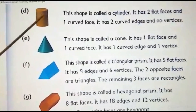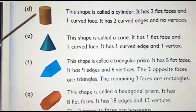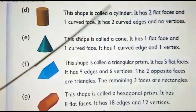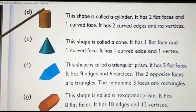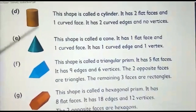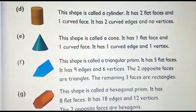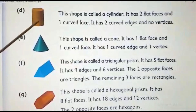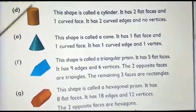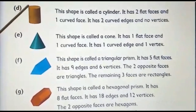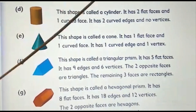A cylinder has two flat faces — one on top and one on the bottom — and one curved face in the middle. It has two curved edges and no vertices. The edge is what differentiates between two faces, and you can see one curved edge at the top and one at the bottom.